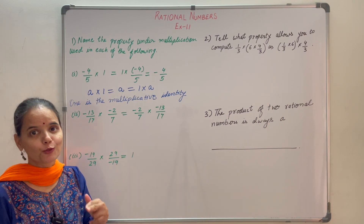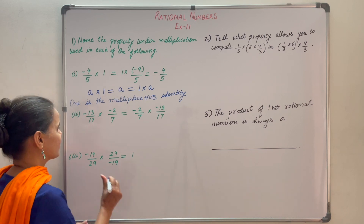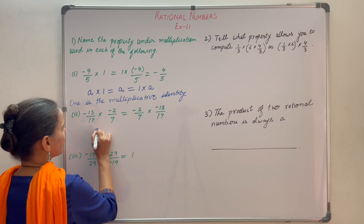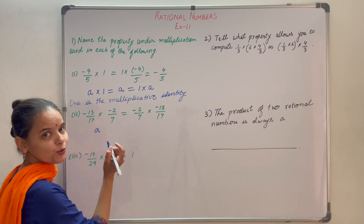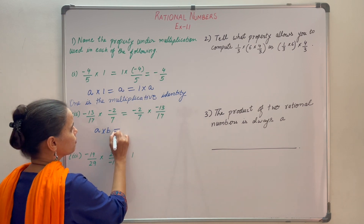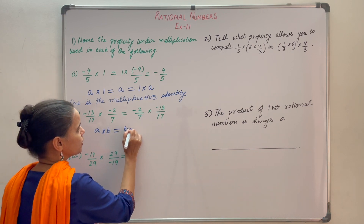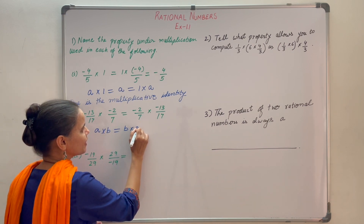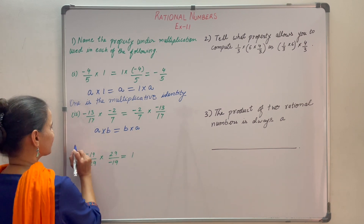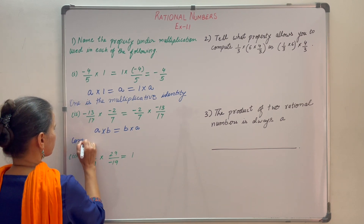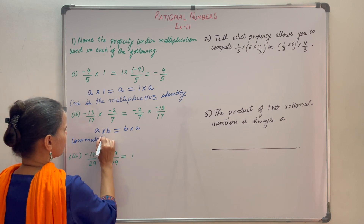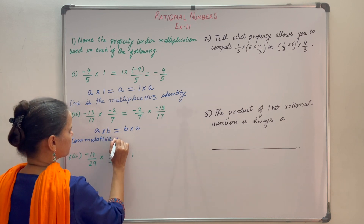Here we are multiplying two rational numbers in any order, and that property is called the commutative property. If there are two rational numbers A and B, then A into B is equal to B into A. So the property used here is the commutative property.